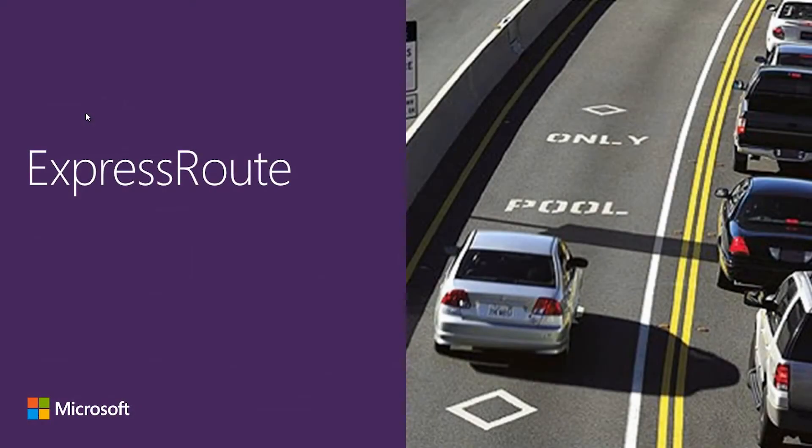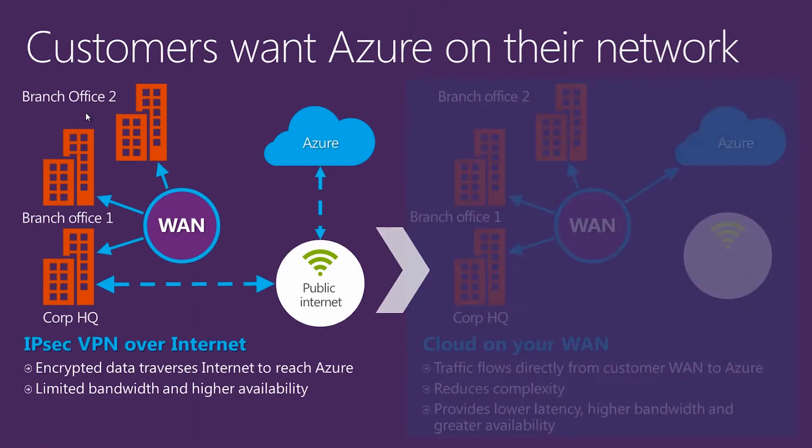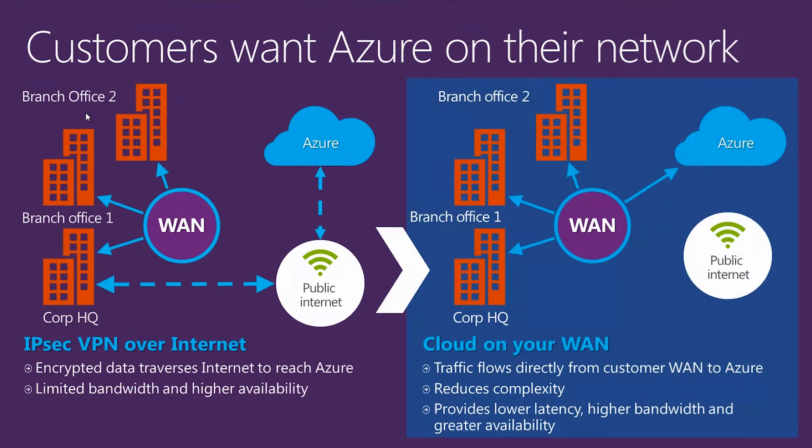Let's talk about ExpressRoute — this is specifically a private connection. We're going to look at how to get Azure on our network. Typically we've had to go out through the public internet, which is more of the site-to-site tunnel model. What we can do with ExpressRoute is implement it within our existing MPLS fabric — it's really an extension of our data center fabric and makes it much easier to connect to Azure resources. The other huge benefit is very high bandwidth and low latency, where a site-to-site tunnel doesn't hold well to latency and sometimes has bandwidth restrictions.